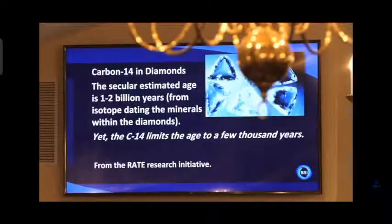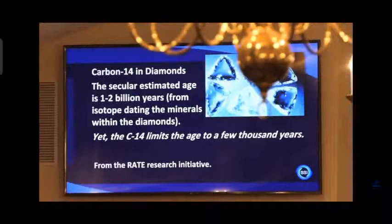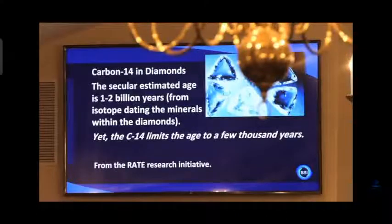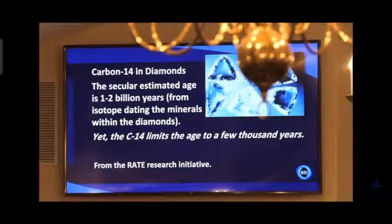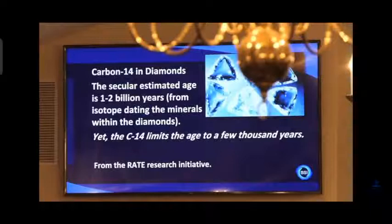We find C14 in diamonds that secularists believe to be one to two billion years old. But the half-life of C14 is 5,700 years — it can't last millions of years. If the entire Earth were nothing but C14, after one million years you'd not have one atom of it left; it would all have decayed into nitrogen. The fact that we find C14 deep in the Earth, where cosmic rays can't penetrate to produce new C14, means those diamonds are apparently just thousands of years old. We also find C14 in dinosaur fossils — they're not millions of years old, they're thousands of years old.